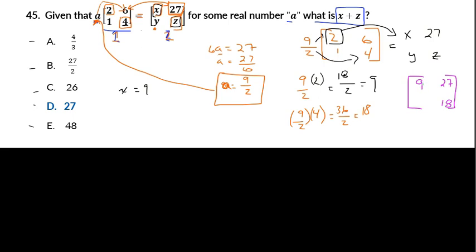Now what we have to do is add the x and z positions together. So we know z equals 18, so x plus z equals 9 plus 18 equals 27. And that is our answer, and it's answer choice D.